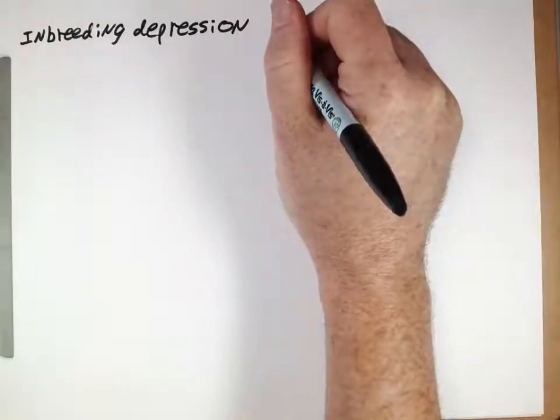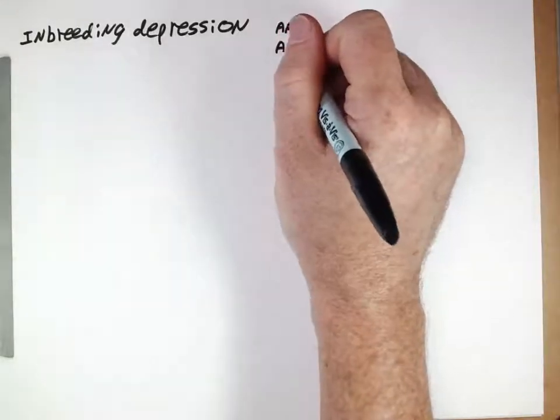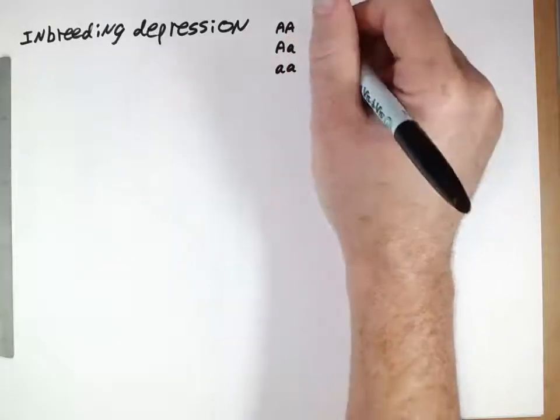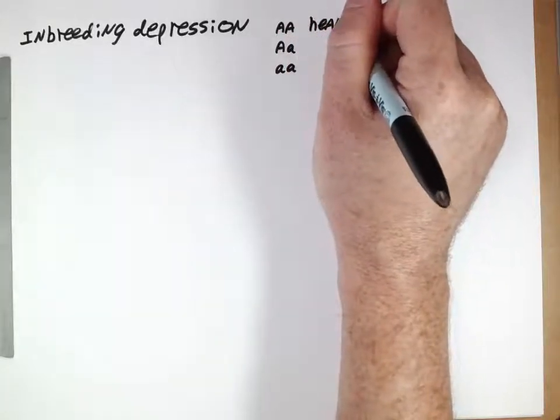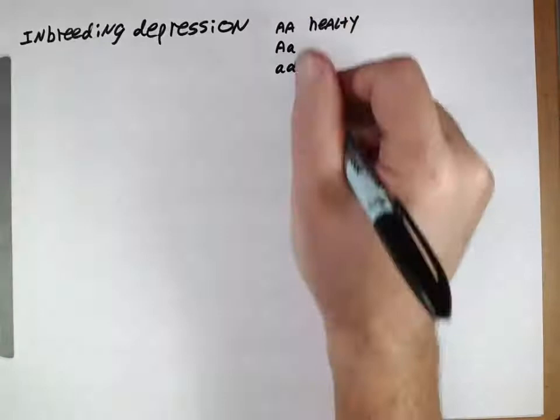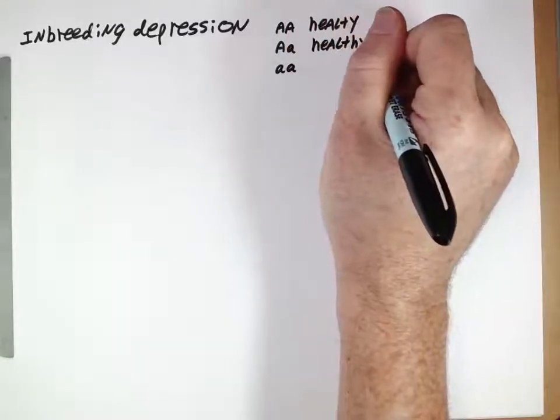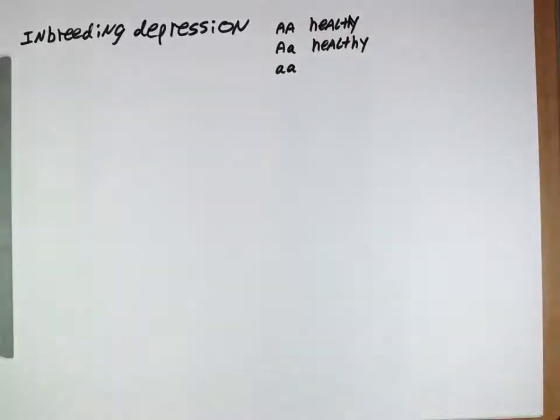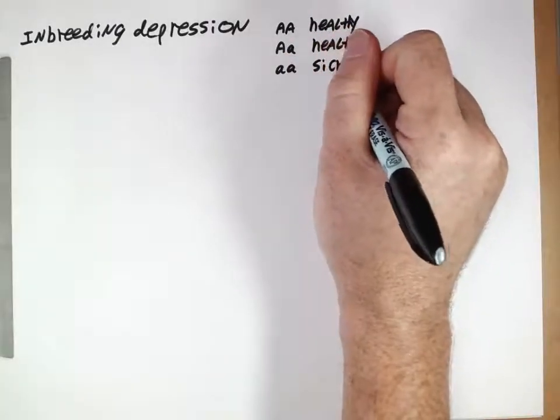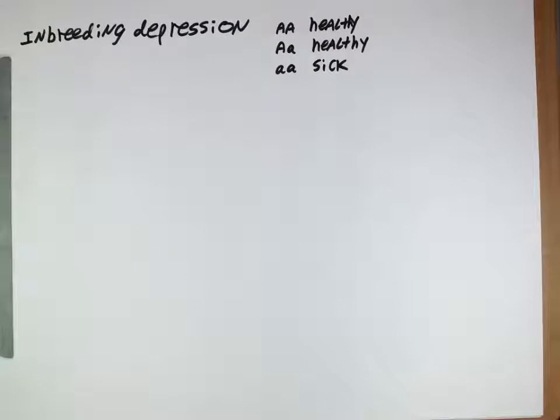We can see quantitatively how that looks. Let's think about the following scenario. Let's think about three genotypes here. These guys will be healthy, the wild type phenotype. These guys will also be healthy. We'll be thinking about a recessive deleterious allele, and then these individuals here they'll be the sick individuals.